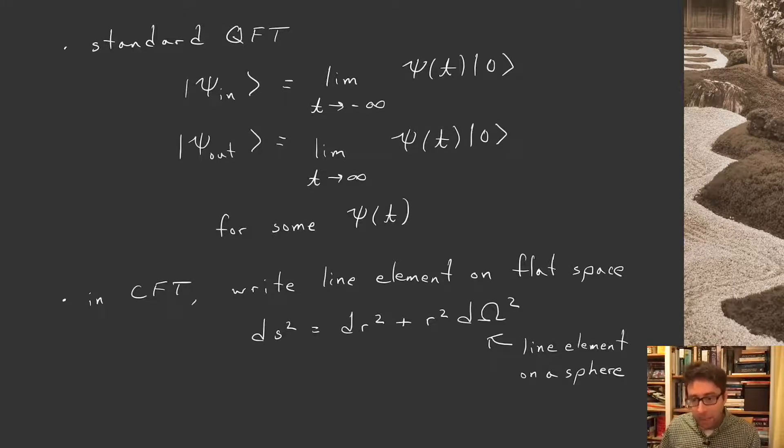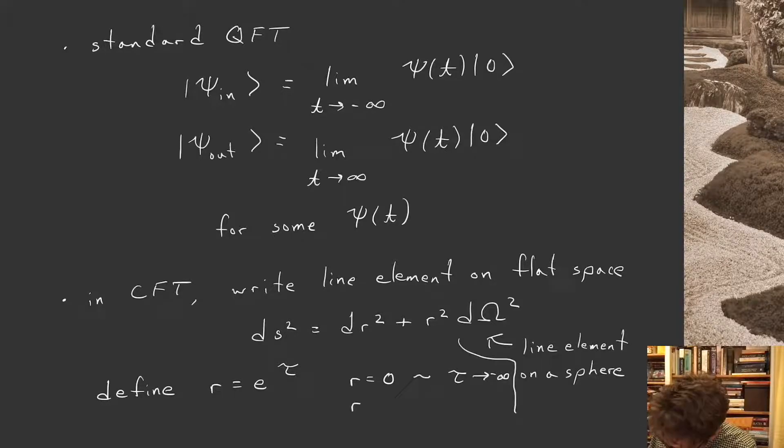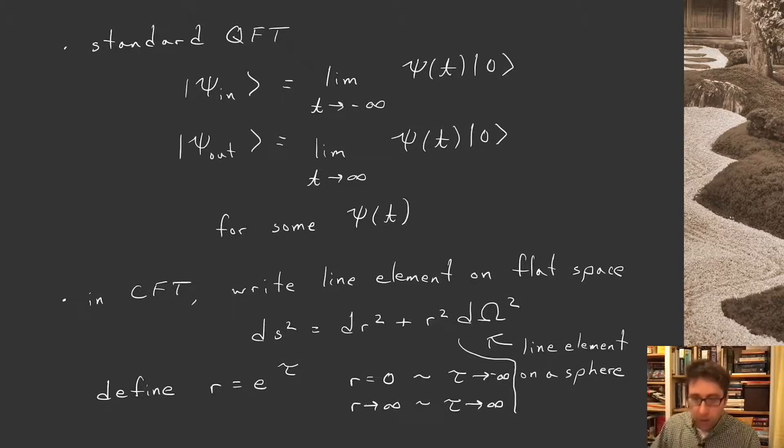Now to think about this as a time, let's define a new coordinate τ. We're going to define τ such that our old radial coordinate is e^τ. And in this way, r = 0 is τ goes to minus infinity, and r goes to infinity is the same thing as τ goes to infinity. So large radial distance from the origin is the far future in this reinterpretation of time, and the origin is the far past.